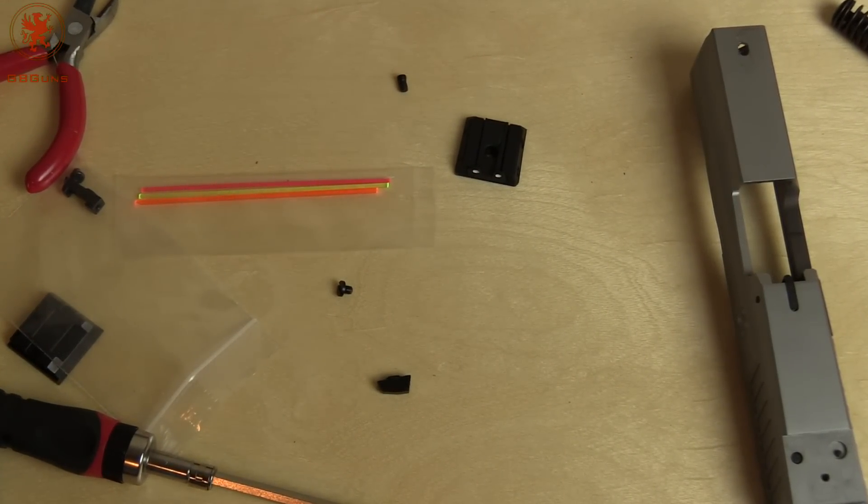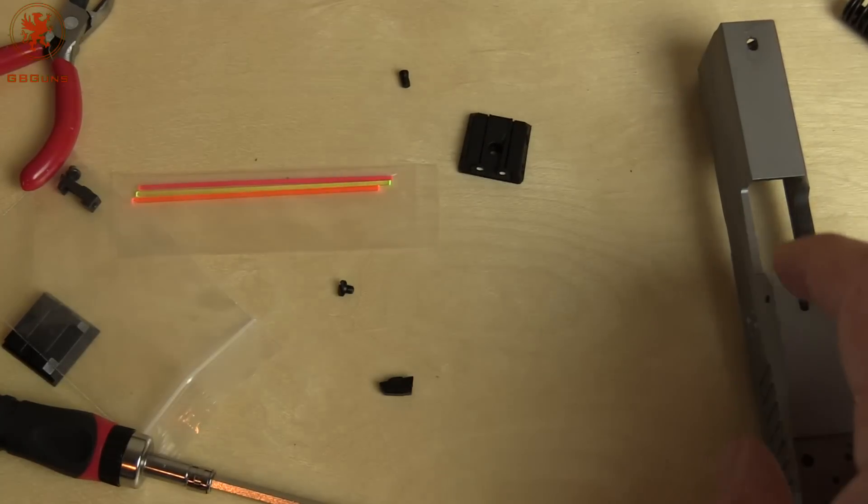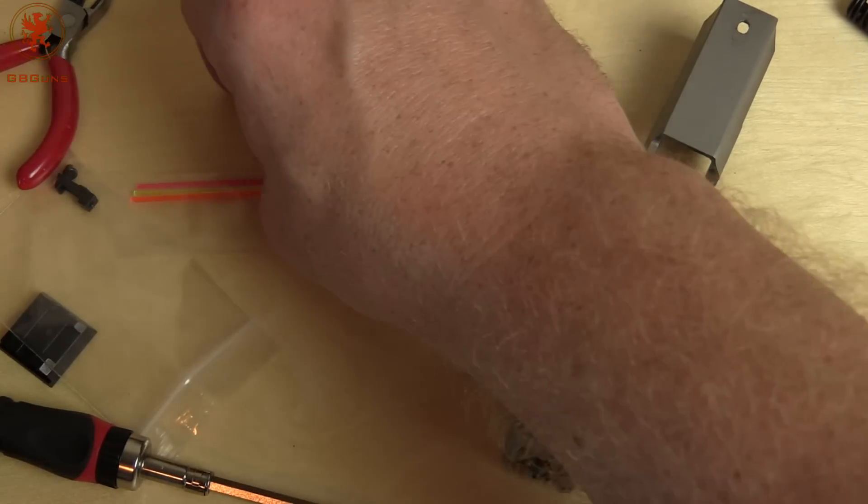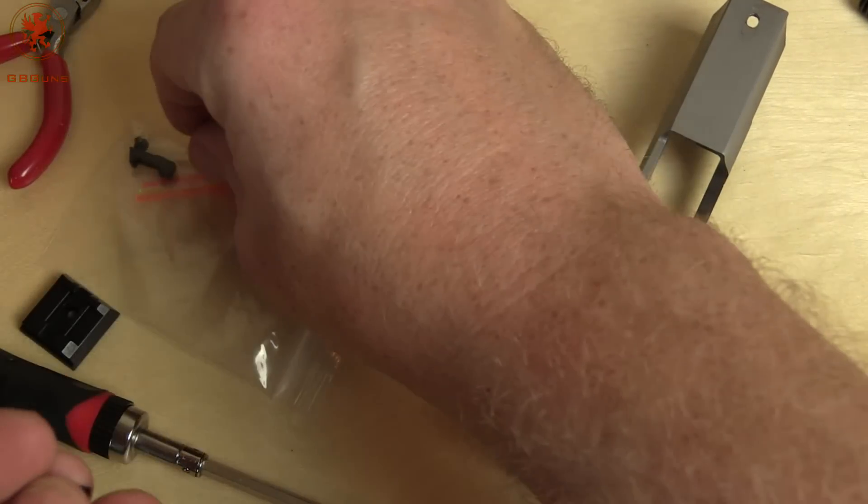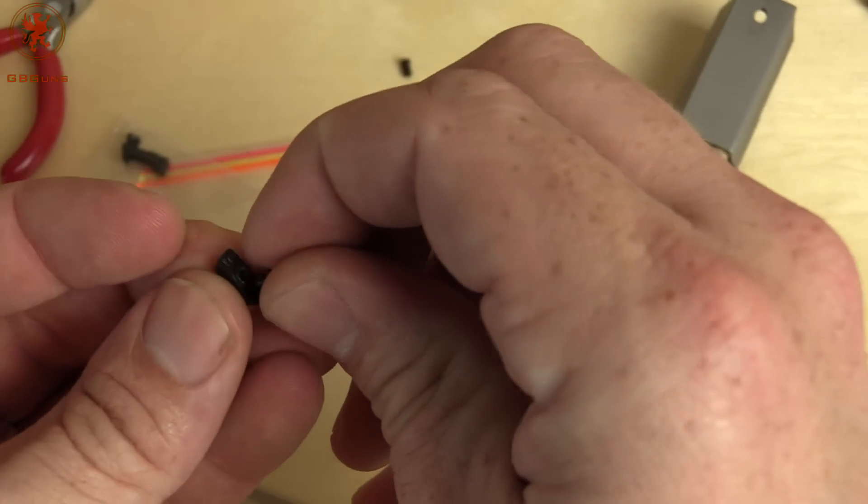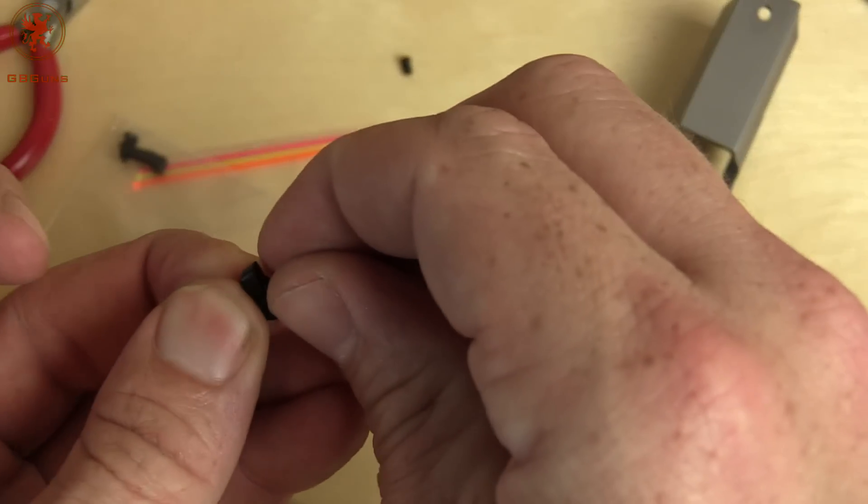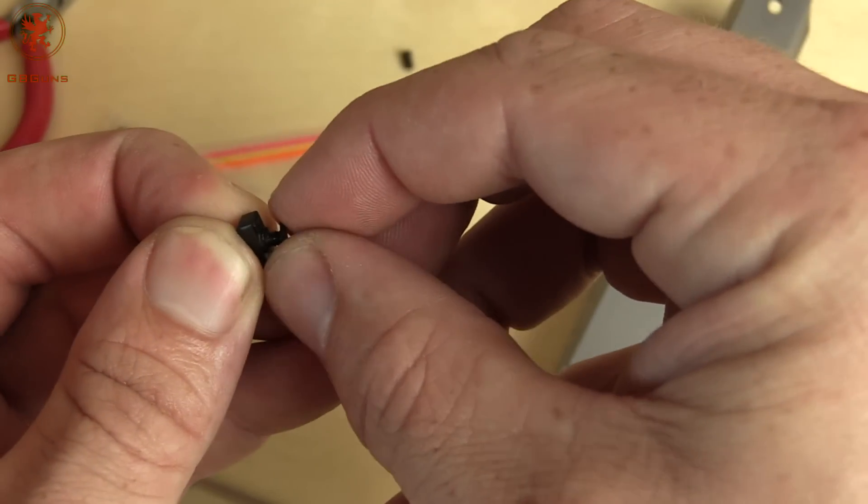Moving on. We've got that out of the way. We want to gently apply a conservative amount of thread locker to the threads. I'm going to put the screw back in the front sight so that I can find it later. I have a higher chance of finding this as a collective unit than I do individual pieces.